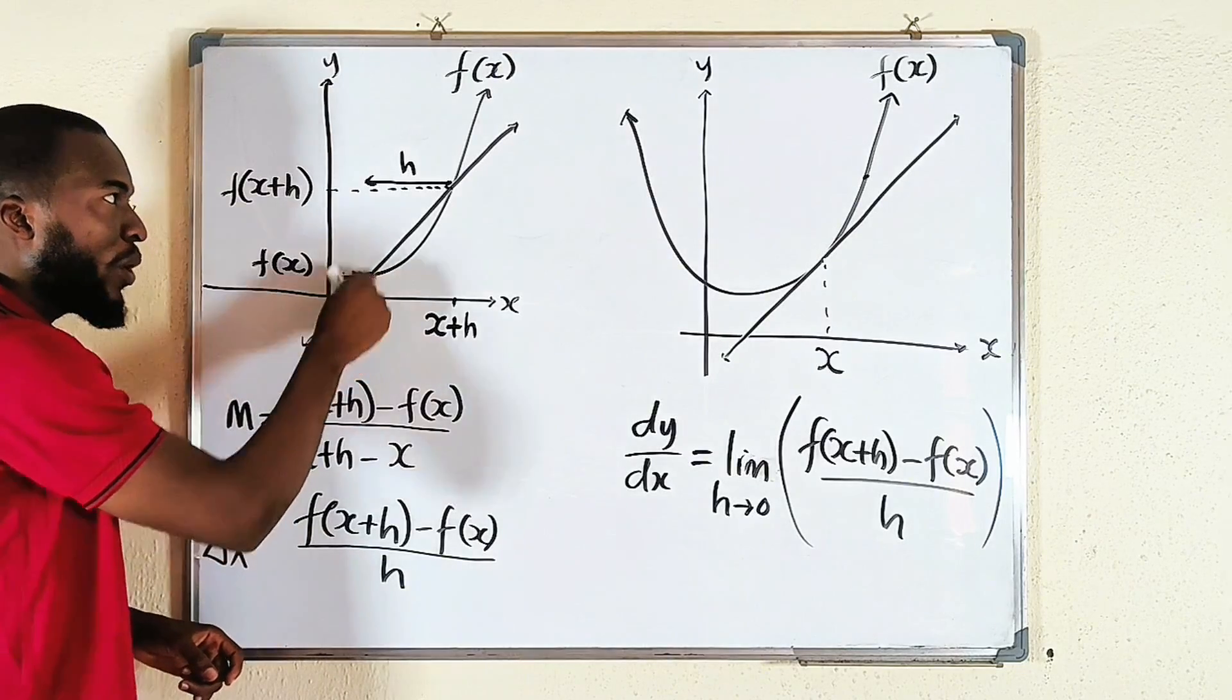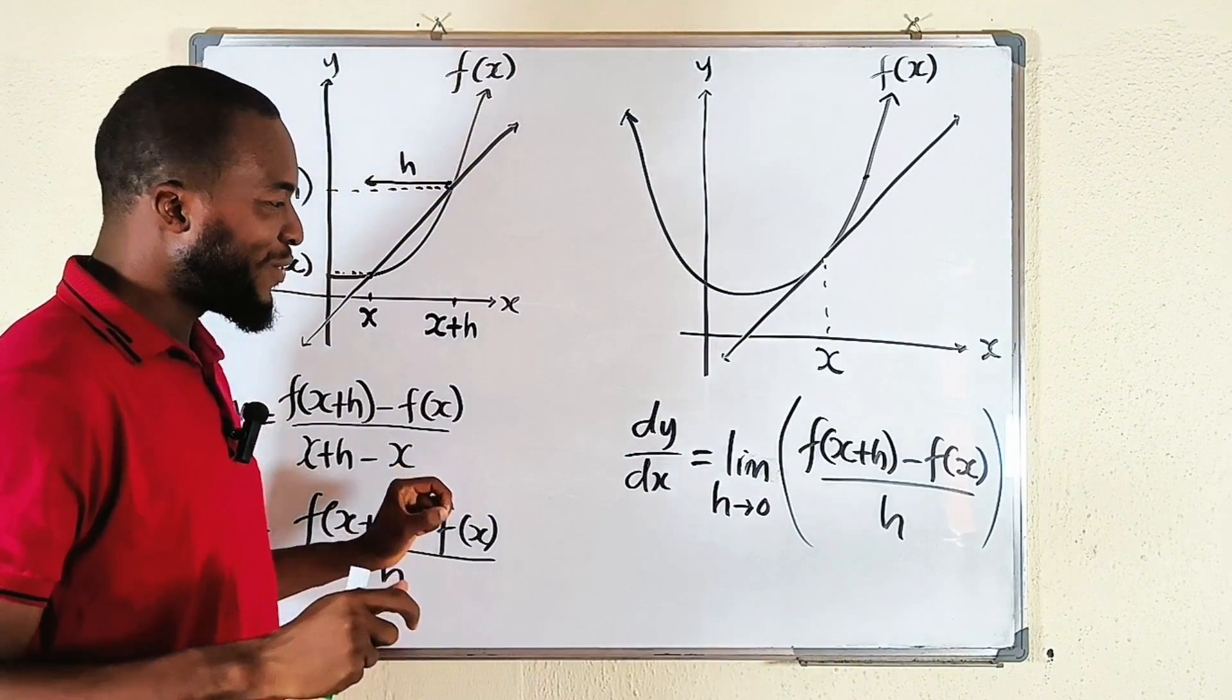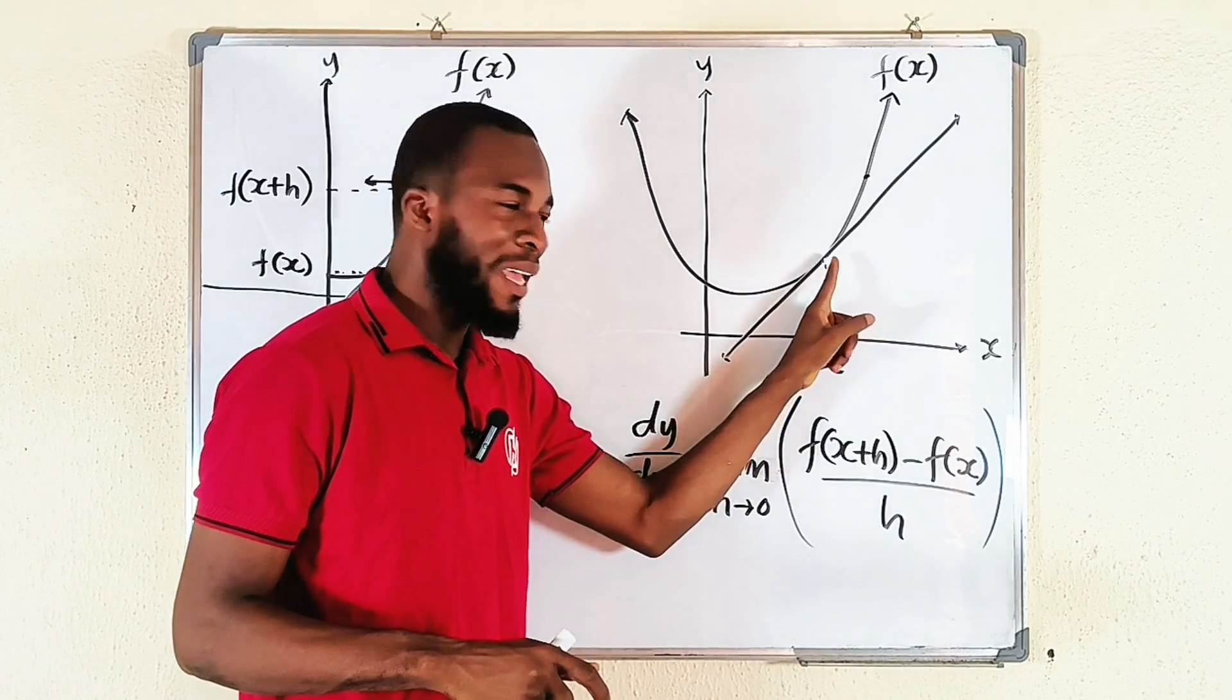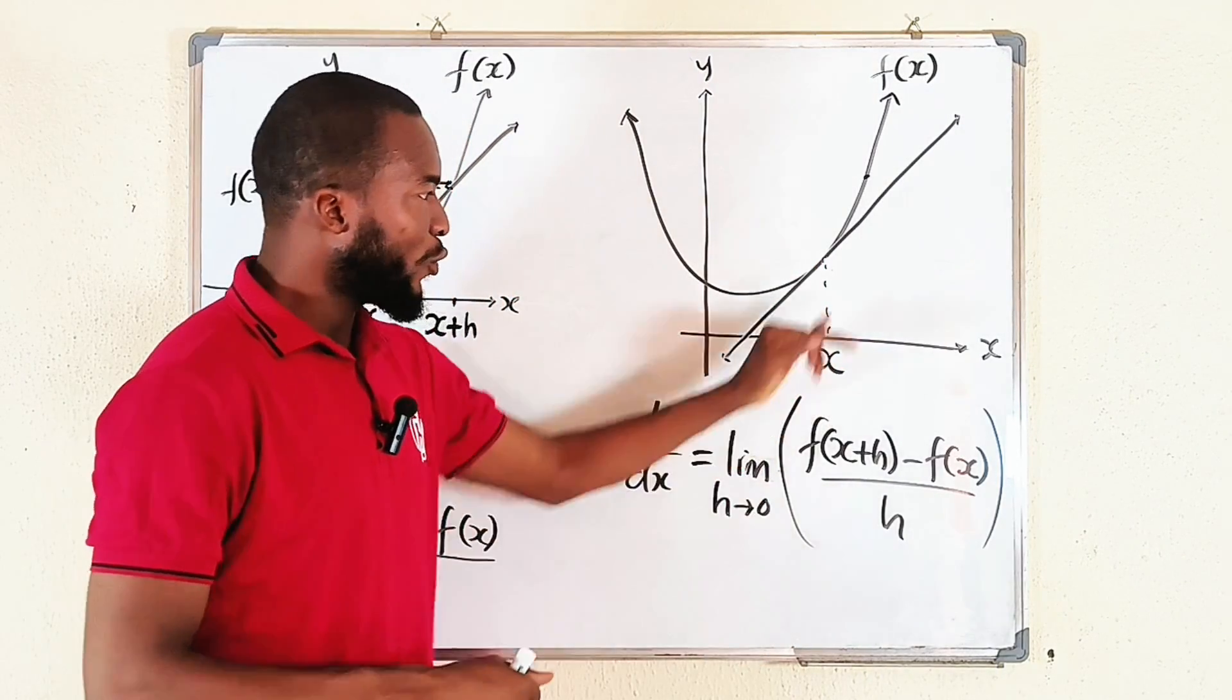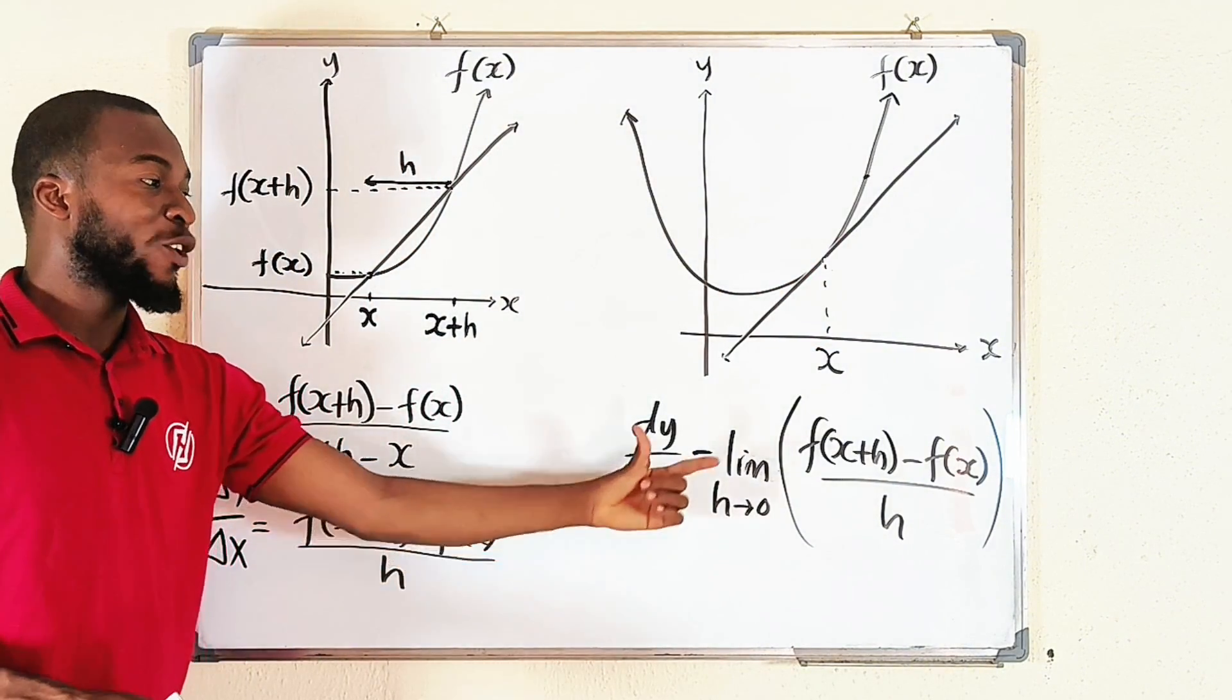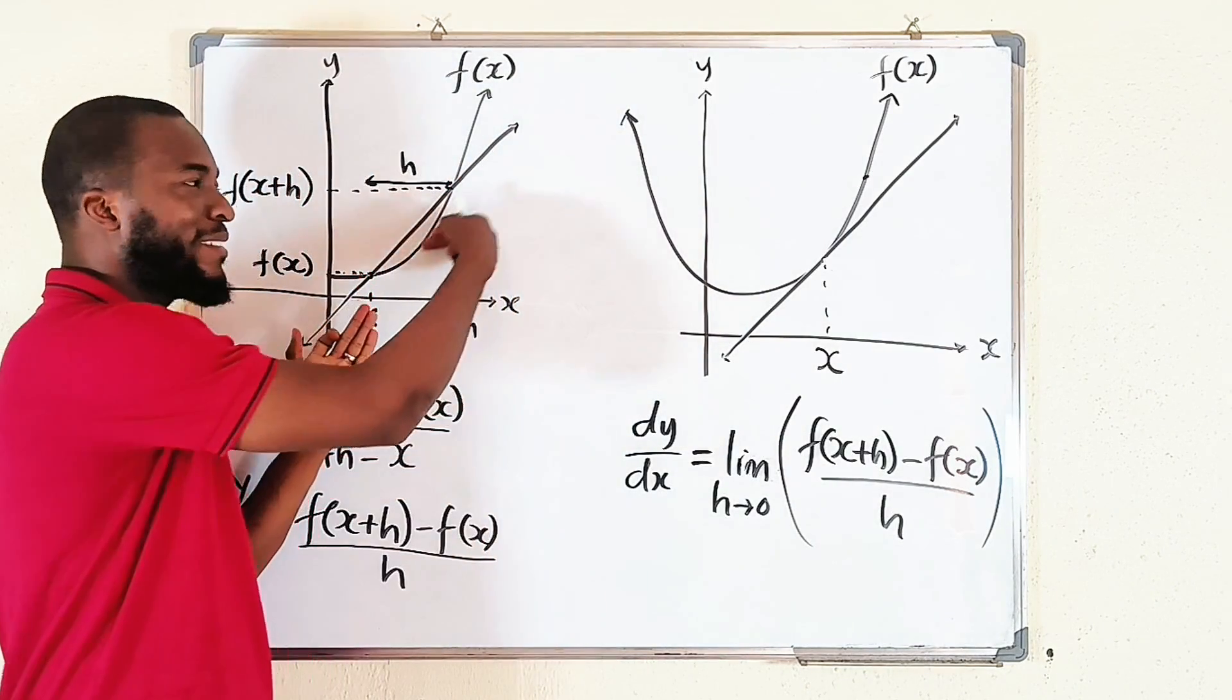At that point, h is almost negligible. Therefore, it approaches 0. This is the derivative of this function f of x at a particular point x. x here represents a value, it could be 3, 4, whatever. So this is the derivative of the function, and it comes from the slope of a secant line as h approaches 0.